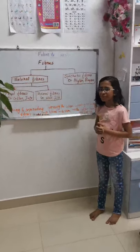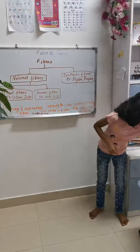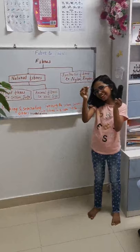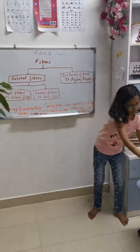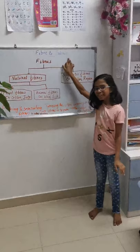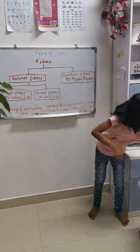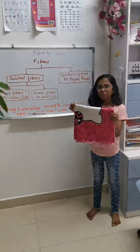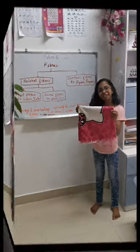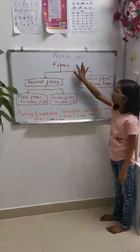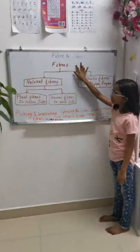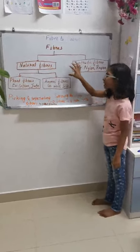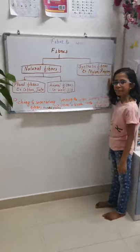What is fiber? Fiber is a long thin thread. What is fabric? Fabric is a piece of cloth used for making clothes. There are two types of fibers: natural fibers, which come from nature, and synthetic fibers, which are man-made.